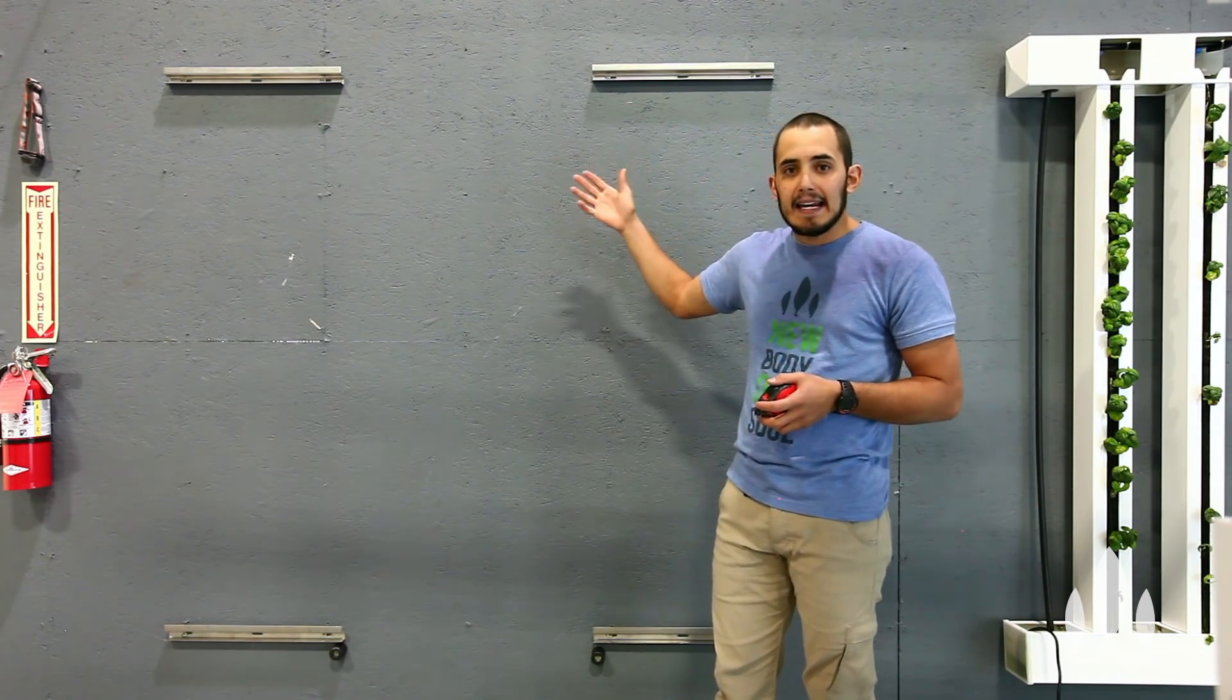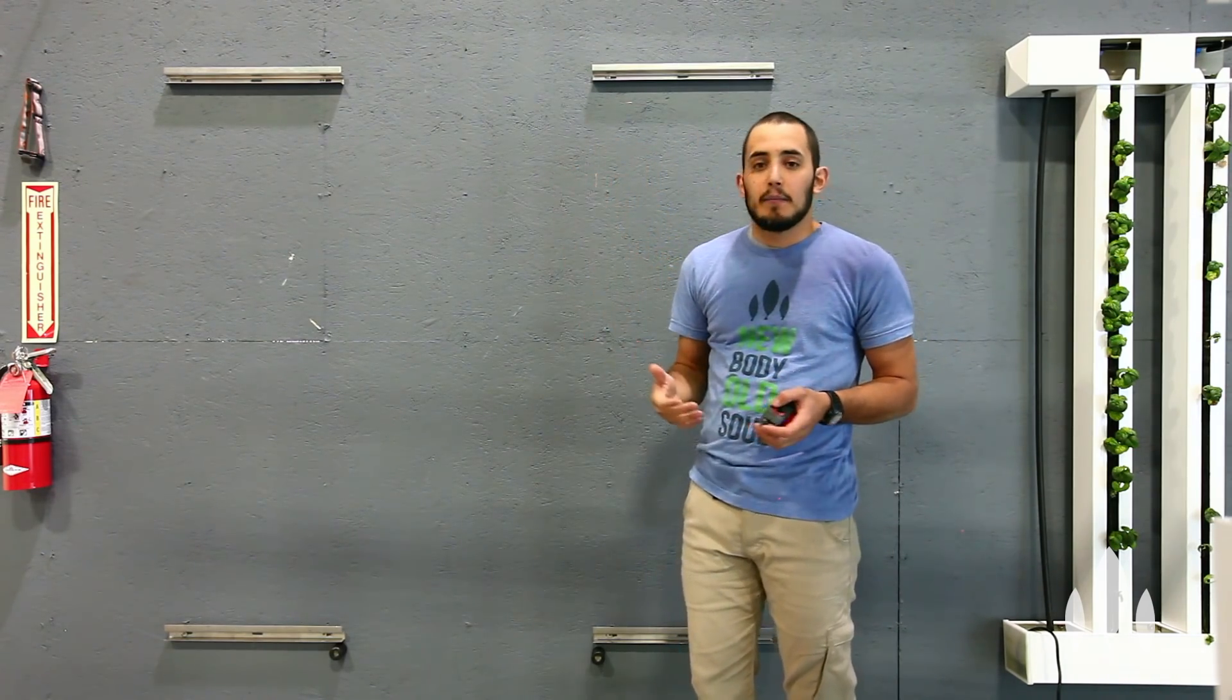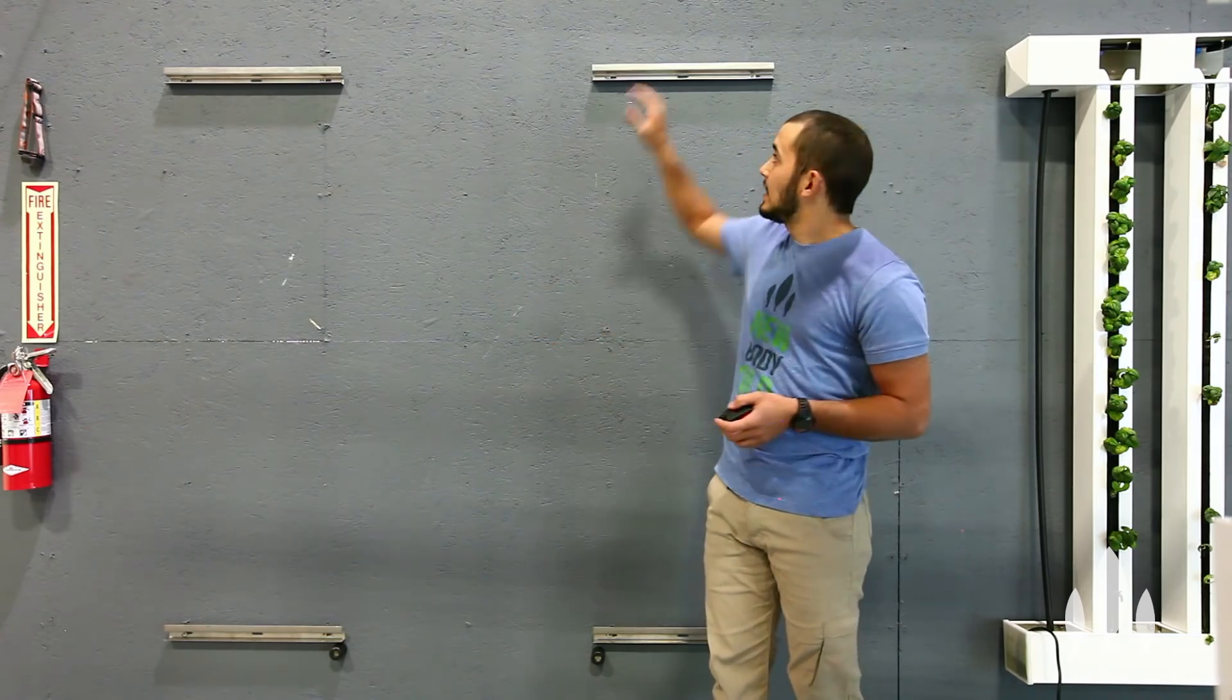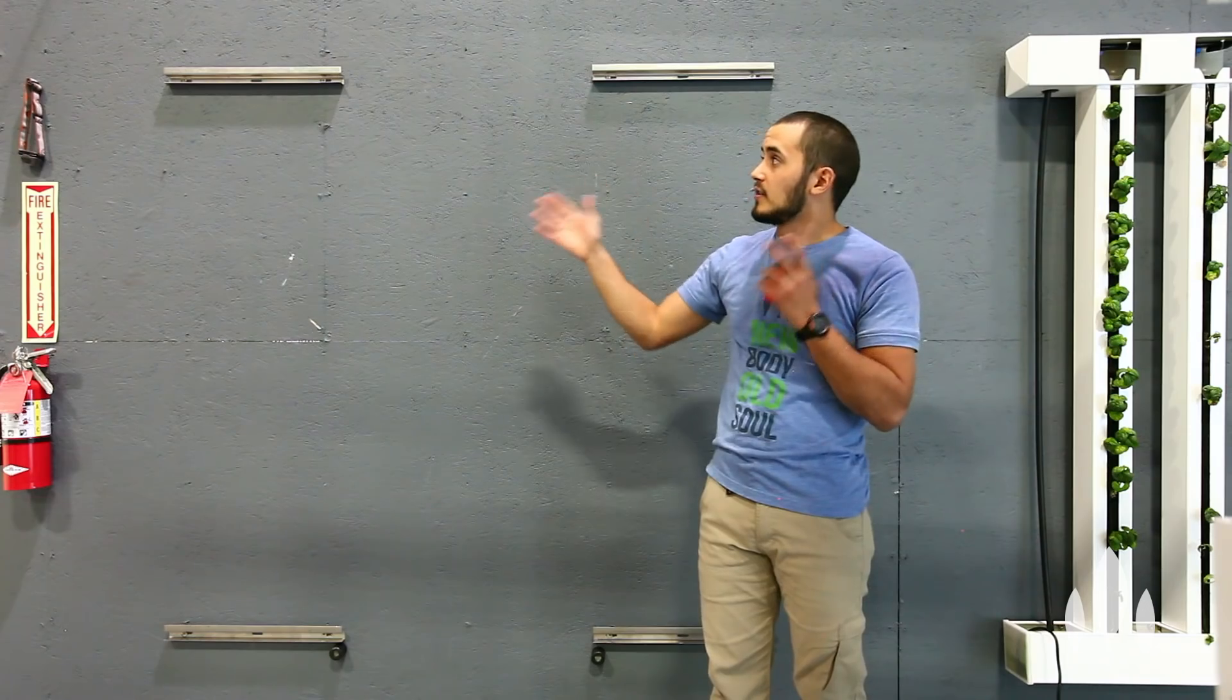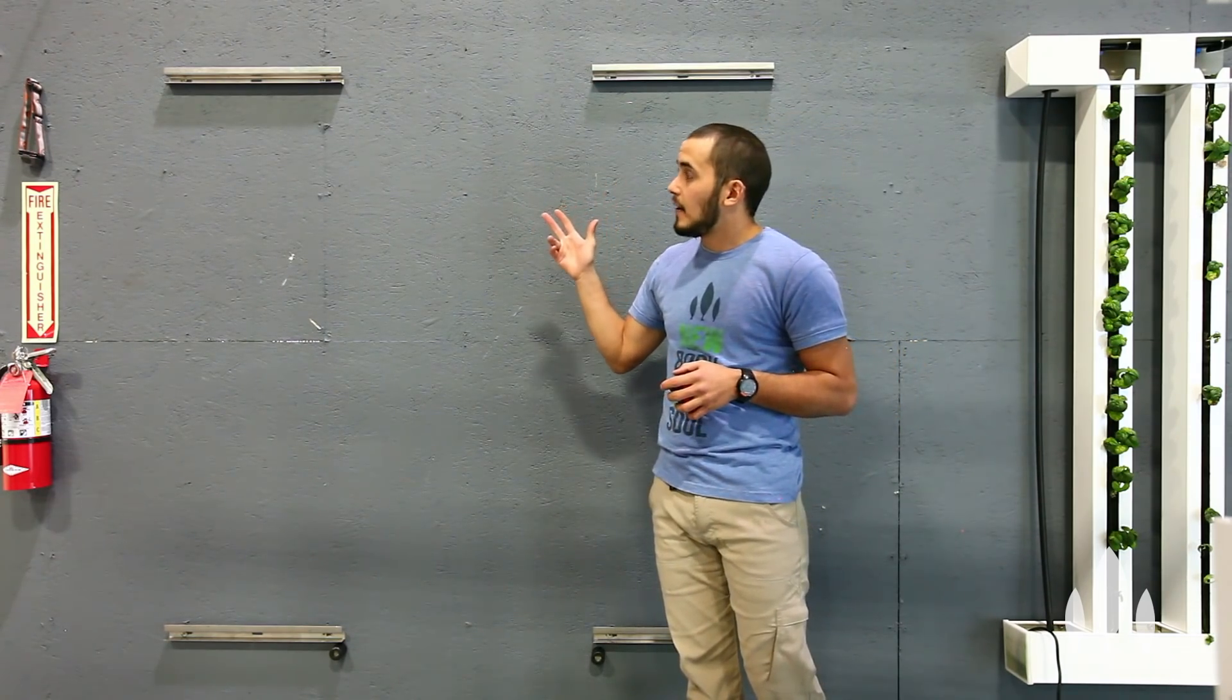These upper channels have 28 inches between them. And what that does is put the header clips directly in the center. So that's kind of your happy medium as far as horizontal spacing for your channels. Once you have those upper channels mounted, you need to mount the lower ones.